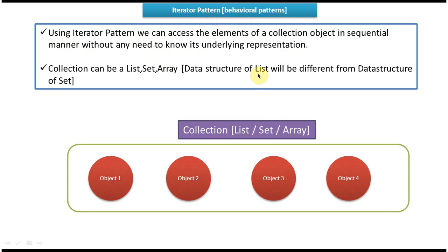We will see this diagram and then I will explain. Here you can see a collection object — it is a container which contains a lot of objects. You can see this container contains four objects: object one, object two, object three, and object four. Examples of a collection are list, set, or array.